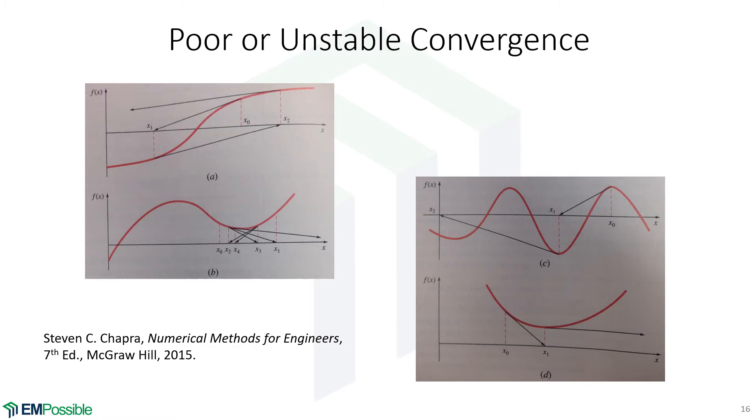This method is very fast but it can have poor or unstable convergence properties. This happens when the function is very non-linear. There's a few cases. Let's say we have a function that looks something like this. Maybe our first guess is right here. The slope will project us way over here. We come down, now the slope projects us way over here. We come up, projects way over here, and it's going unstable because we have this very non-linear function.